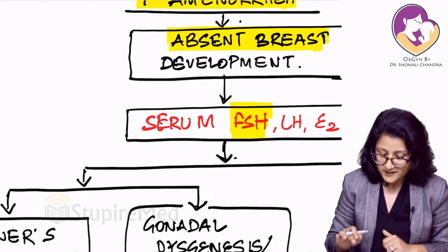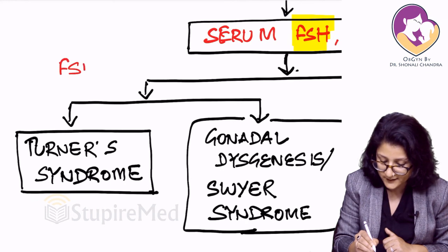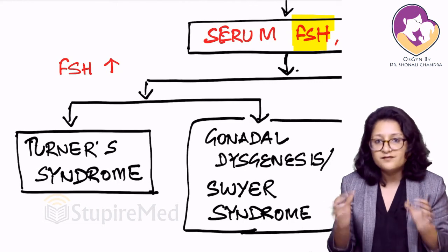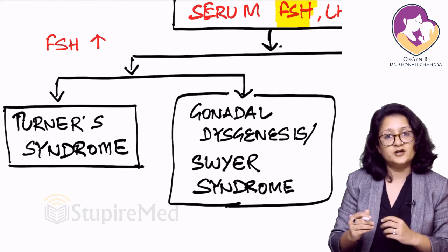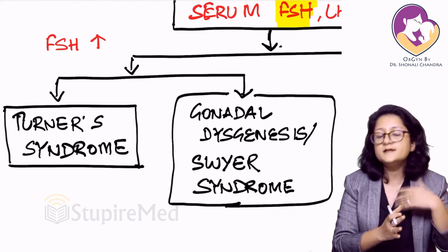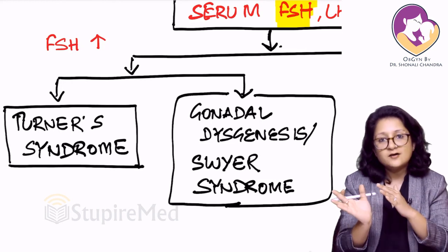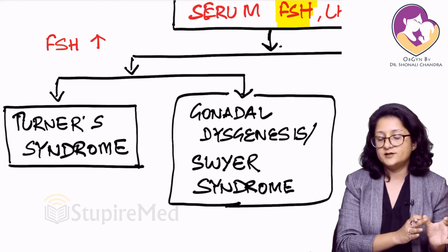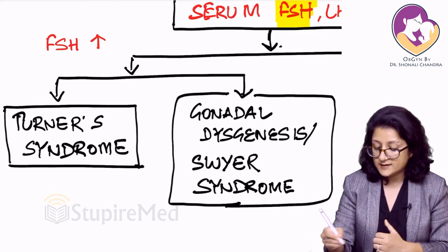After doing the serum FSH, if it is elevated — if the FSH is high — that means the gonads have failed. There are two possibilities: Turner's syndrome and gonadal dysgenesis. Turner's syndrome is the most common form of gonadal dysgenesis and also the most common cause of primary amenorrhea. Remember that Turner's syndrome is also gonadal dysgenesis, which involves streak gonads.